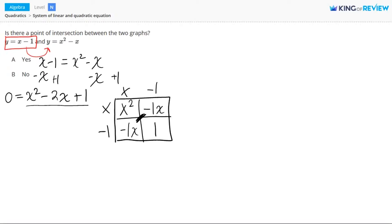If you add these two boxes together, negative 1 x plus negative 1 x, you get the negative 2 x here. So we have zero equals x minus 1 times x minus 1.